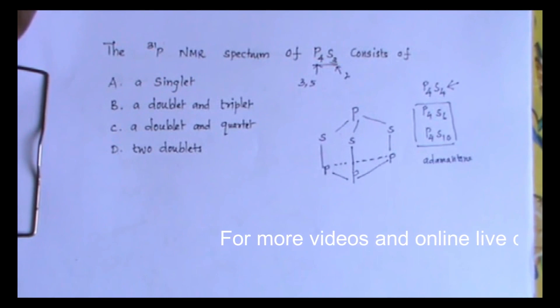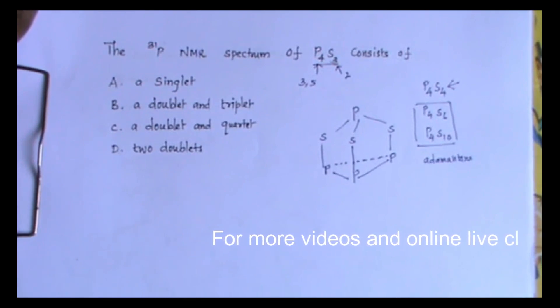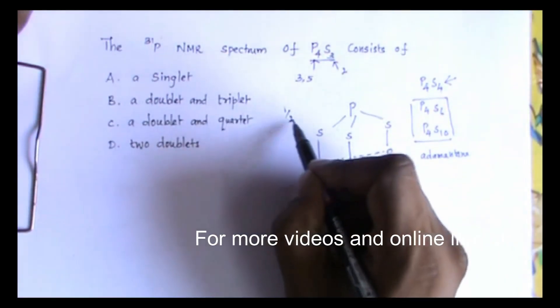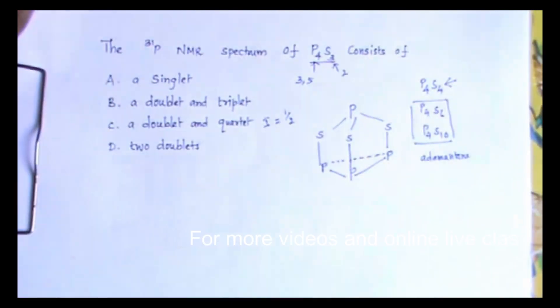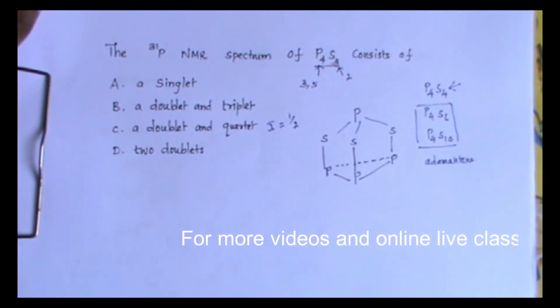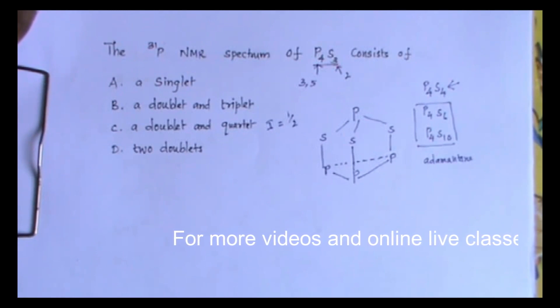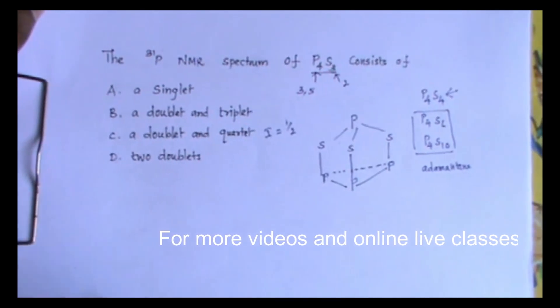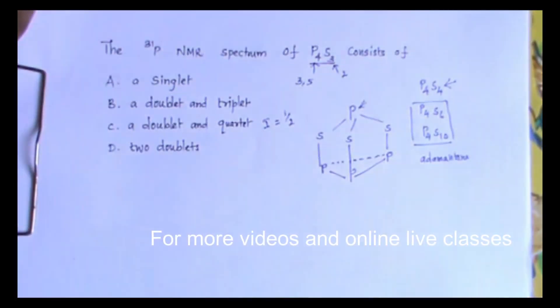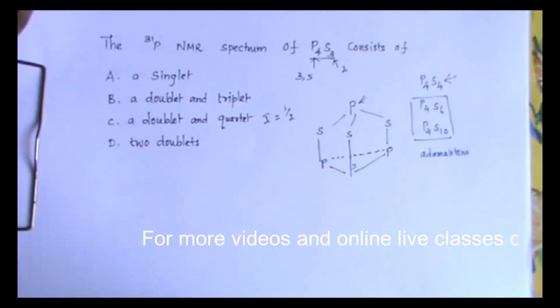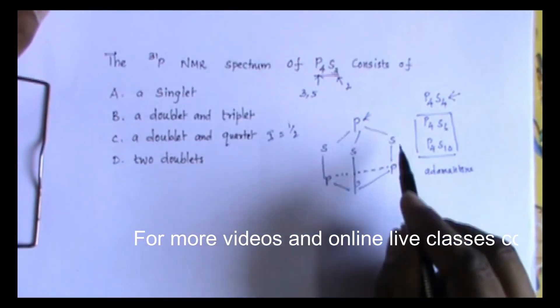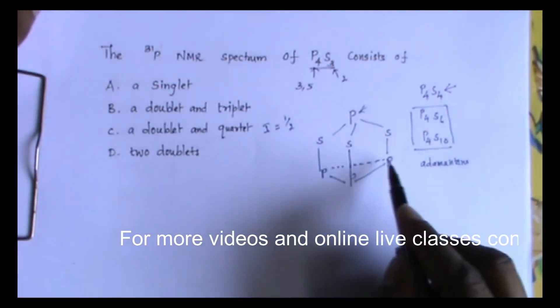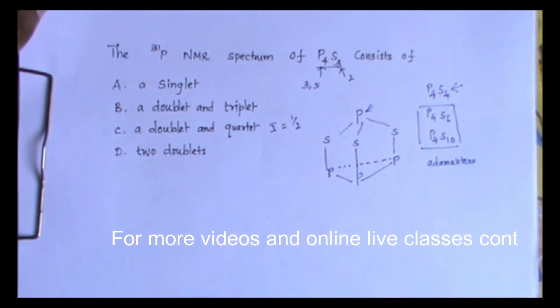Now let's go to the phosphorus-31 NMR spectrum of the given compound. Phosphorus has I value of one-half, similar to hydrogen and fluorine atom. Here we have two different types of phosphorus atoms. This is attached with three sulfur atoms, but these three are different. These three are attached with one sulfur atom and two phosphorus atoms.